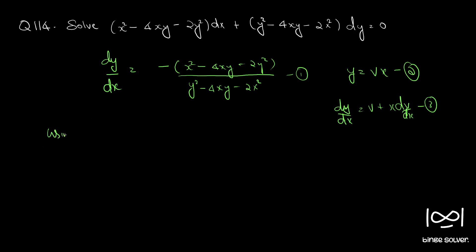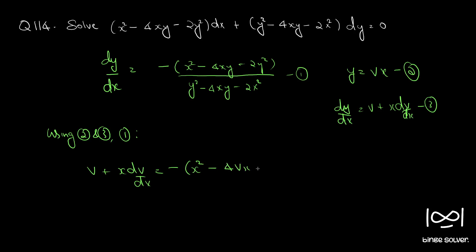Now using the substitution y = vx and equation 3, the equation becomes: v + x·dv/dx = minus (x² - 4vx·x - 2v²x²) divided by (v²x² - 4vx·x - 2x²).